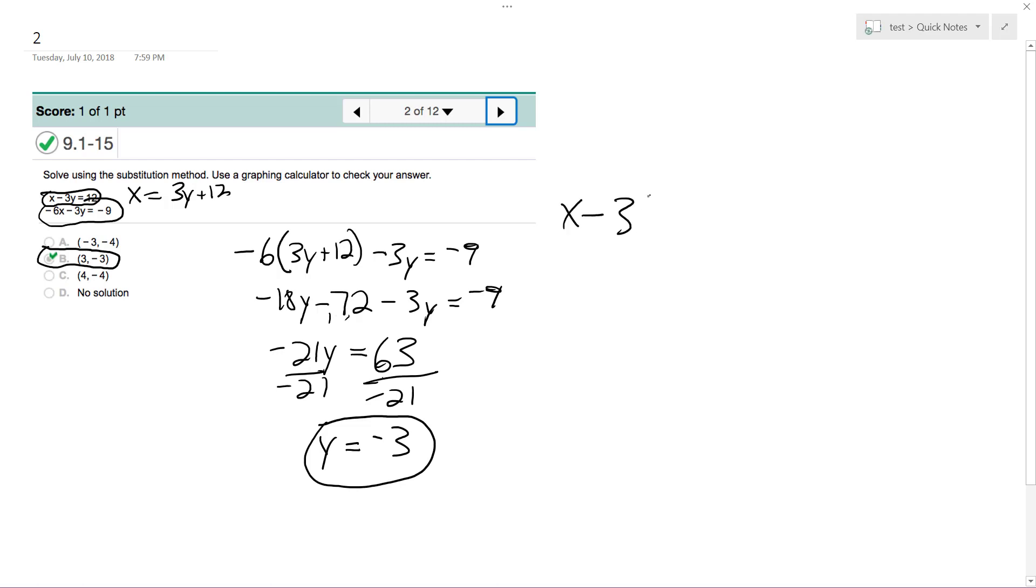So x minus 3, and then substitute for y, negative 3 is equal to 12. x plus 9 is equal to 12, minus 9, minus 9. x is equal to 3.